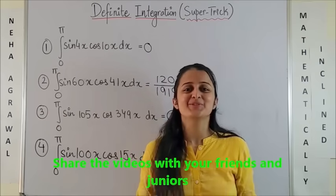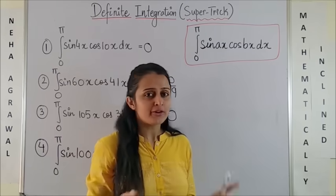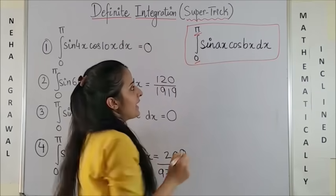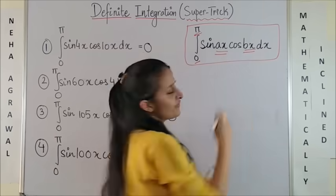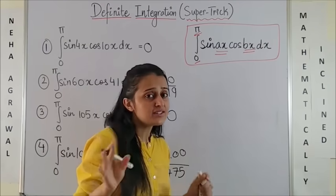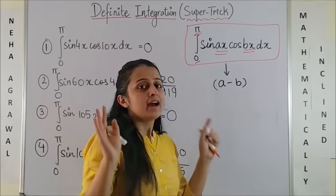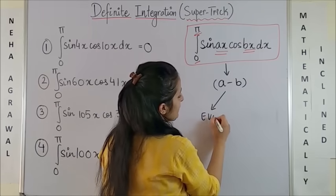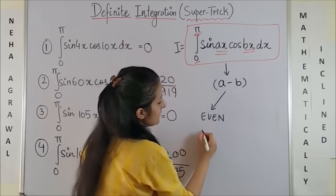Want to know the secret? Let me reveal the secret formula to you. So if you ever come across this format where you have the limits going from 0 to π and then it is sin(ax) · cos(bx), the first thing you would do is calculate a minus b. And if it turns out to be an even number, then the value of this integral would be simply zero.